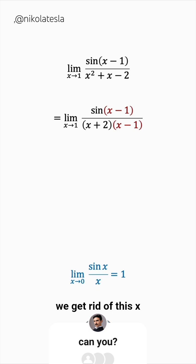How do we get rid of this x plus 2 factor though? So we can just split it as 1 over x plus 2 times the sine of x minus 1 over x minus 1.